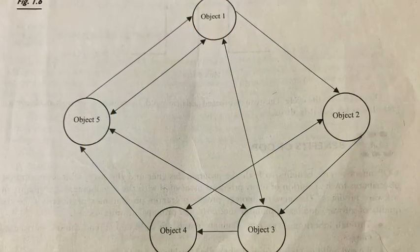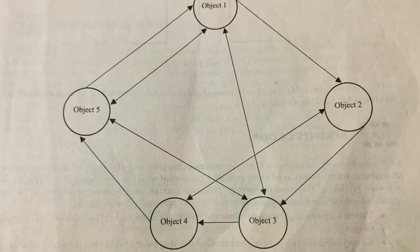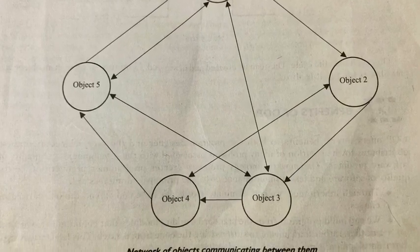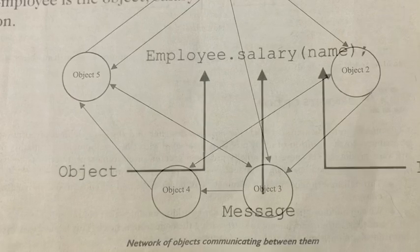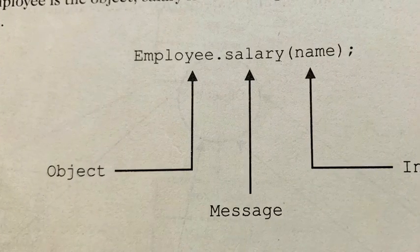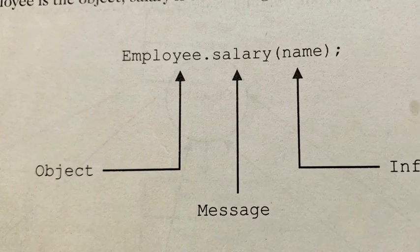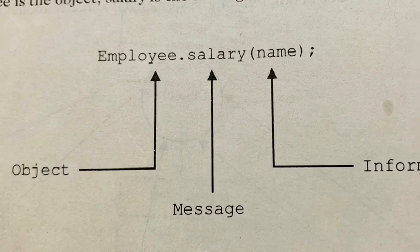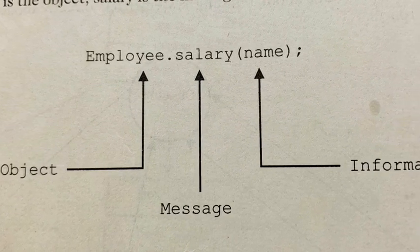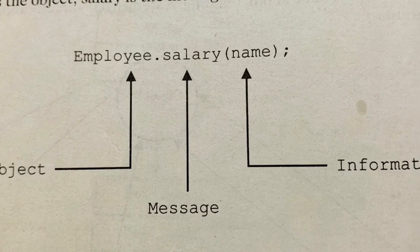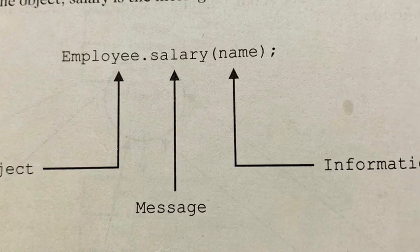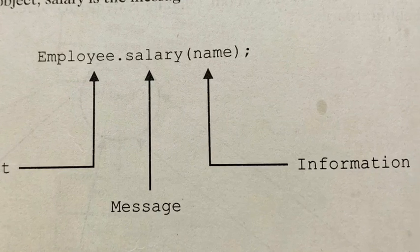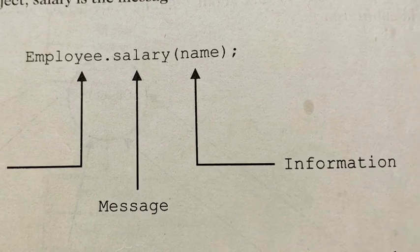The figure represents objects communicate with one another by sending and receiving information like the same way people pass messages to one another. Message passing involves specifying the name of the object, name of the message and the information to be sent. For example, consider this statement: employee.salary(name). Here, employee is the object, salary is the message and name is the parameter that contains information.